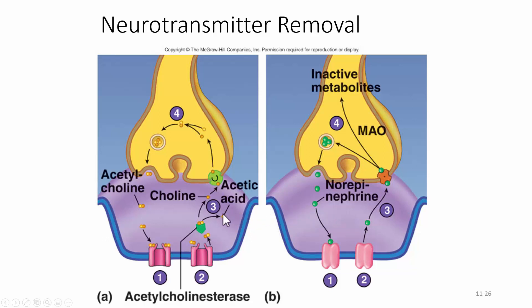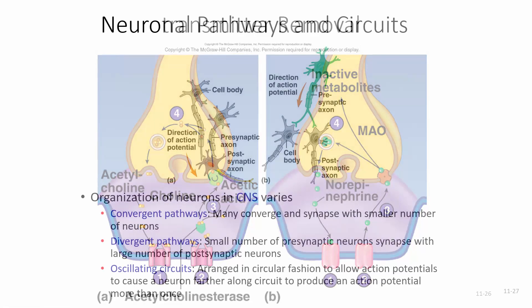We might also use an enzyme to break down the neurotransmitter — in the case of acetylcholine, the enzyme acetylcholinesterase breaks it down into choline and acetic acid. Through active transport, the choline is pumped back (reuptake) into the pre-synaptic terminal, recombined with acetic acid to remake acetylcholine, and stored back into the synaptic vesicle. Another method is using a pump to actively transport the neurotransmitter directly back into the pre-synaptic terminal and into a vesicle.